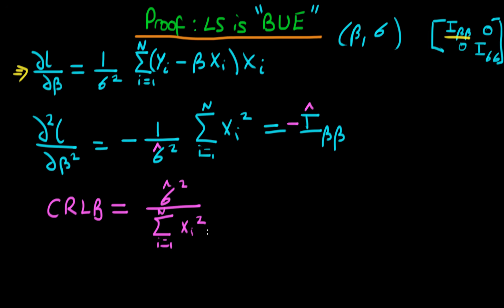This Cramér-Rao lower bound looks very similar to what we obtained via least squares, and in fact it is exactly the same estimated variance as that obtained via least squares. So the maximum likelihood estimator for beta has exactly the same estimated variance as the least squares estimator.